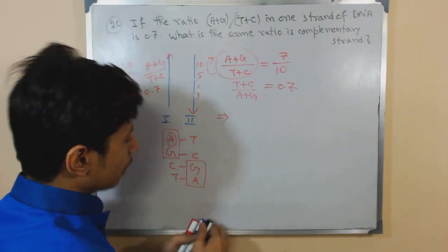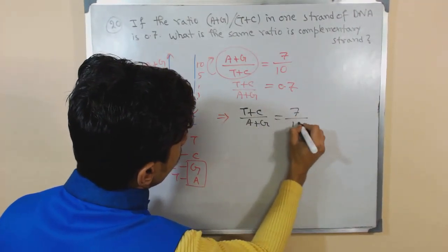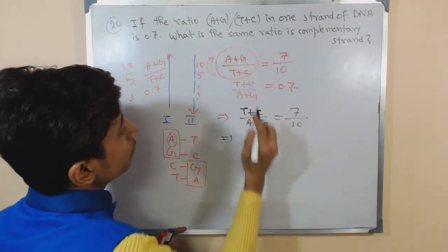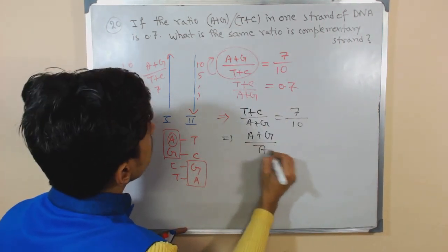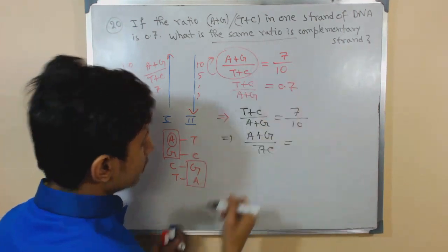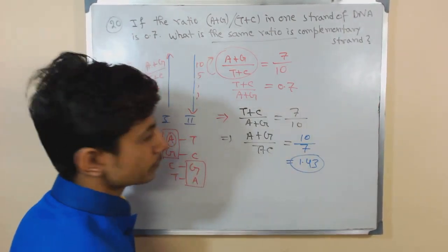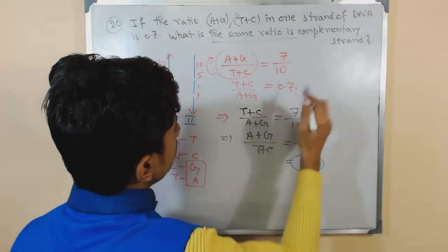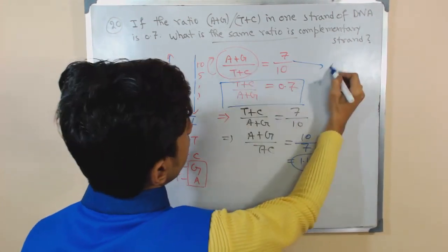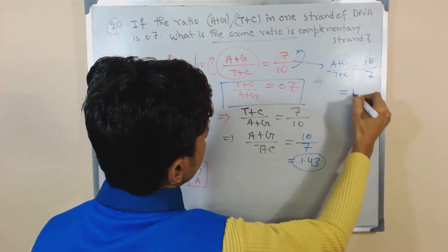Once we establish this, we need to find the ratio adenine plus guanine by thymine plus cytosine in the complementary strand. Simply swap the value: instead of 7 by 10, we get 10 by 7, which equals 1.43. That is the answer.